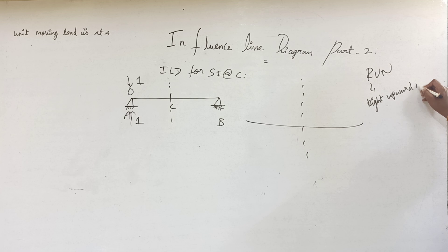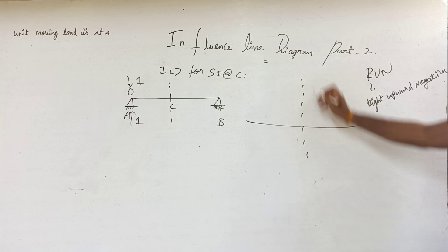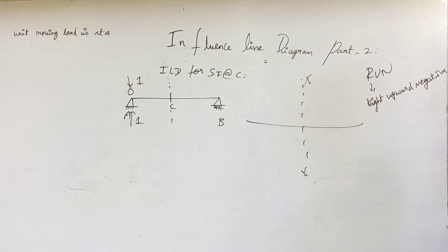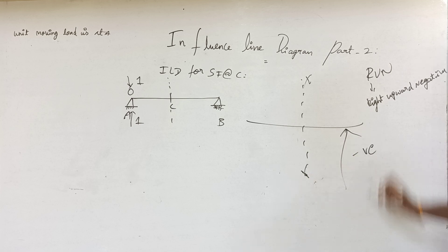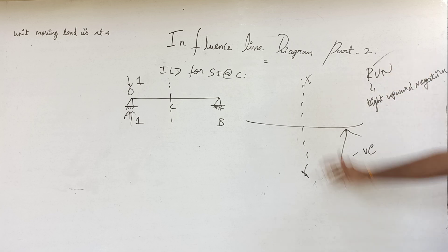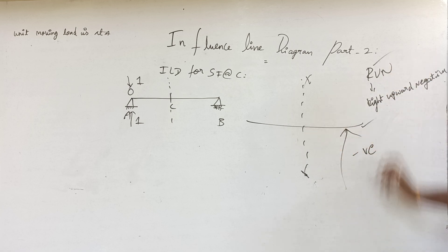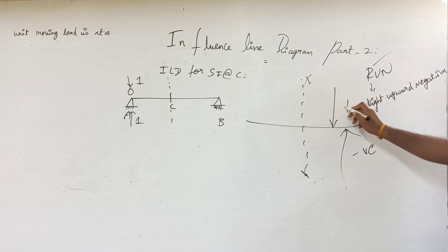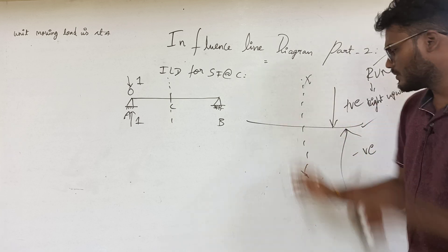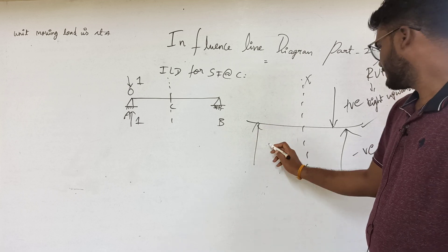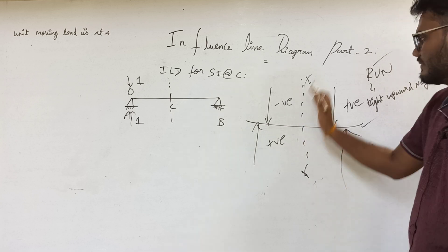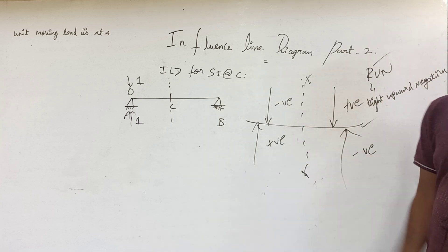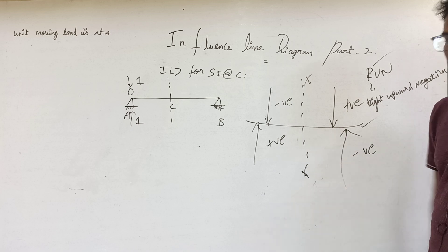The shortcut is RUN: Right Upward Negative. That means on the right side of the section, if one force acts upward, it is negative. Section right side downward is positive. Section left side upward is positive. Section left side downward is negative. This is the shear force sign convention, followed universally.